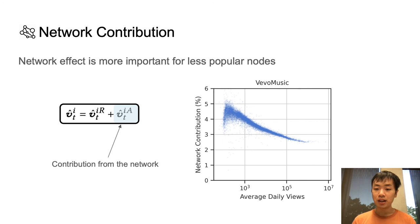This next figure plots the forecast contribution from the neighbors of a node against the average daily view count of that node. An interesting observation is that the more popular a node is, the less important the network effect becomes when it comes to making predictions.